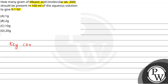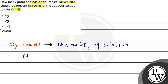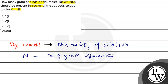So the key concept we are going to use in this question is normality of solution. Normality of solution is nothing but the number of gram equivalents present in one liter of a solution. Normality is denoted by N, which equals number of gram equivalents divided by volume of solution in liters.